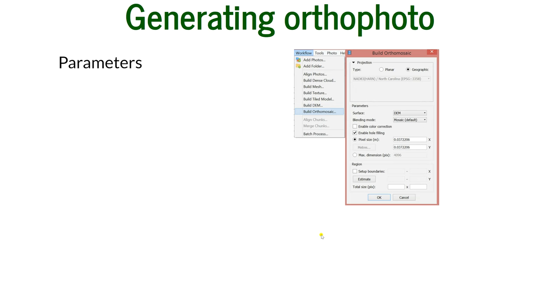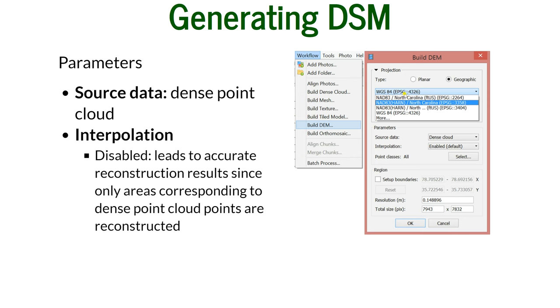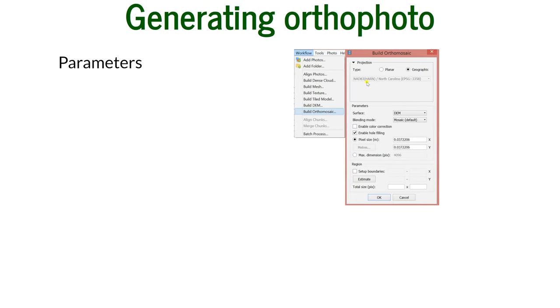The last part is generating orthophoto. You also have parameters. You can build it on different surfaces—on DEM that we just generated or on the mesh. We want to use the DEM. You choose the projection. In this case, I chose EPSG 3358, which is the North Carolina state plane projection in meters. Now when I chose to generate orthophoto, I always have to build the orthophoto based on the projection that is also for my source data, so for DEM.